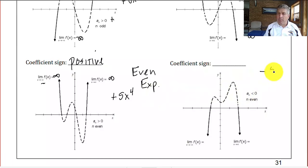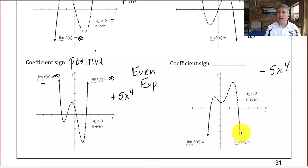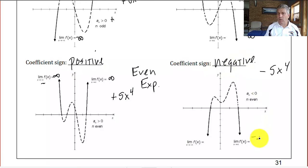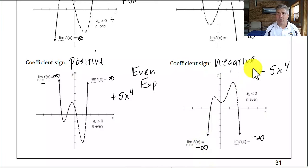This one might be like negative 5x to the fourth. Again, the exponent on our leading coefficient is even, so end behavior is in the same direction. But since this one is negative, the end behavior goes in the negative direction. Our coefficient sign is negative, and we go to negative infinity for both right-hand and left-hand behavior.